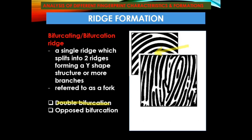The double bifurcation consists of a single ridge that contains two bifurcations. There is a first bifurcation and then a second bifurcation — this particular formation with two bifurcations is considered a double bifurcation.